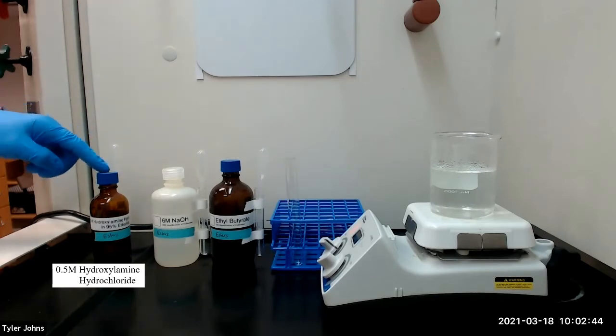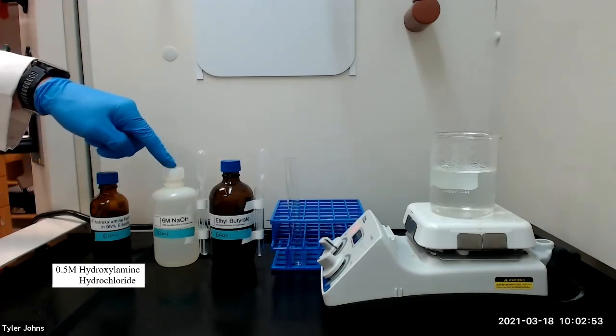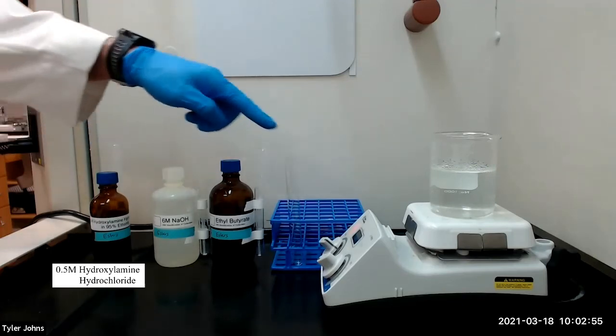We will begin by adding one milliliter of 0.5 molar hydroxylamine hydrochloride dissolved in 95% ethanol and 0.4 milliliters of 6 molar sodium hydroxide to a test tube.